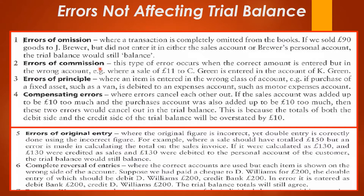Next we have errors of commission. This type of error occurs when the correct amount is entered but in the wrong account. Usually you find it taking place in personal accounts where people have similar names, but it can also take place where you have two accounts of the same type — for example, two real accounts, two nominal accounts, or two personal accounts.